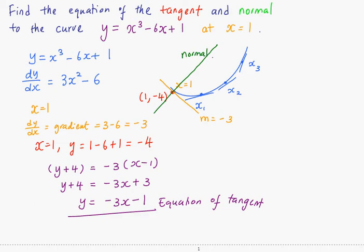The gradient of the orange line is -3. So the gradient of the normal will be the negative reciprocal, which is positive 1/3.